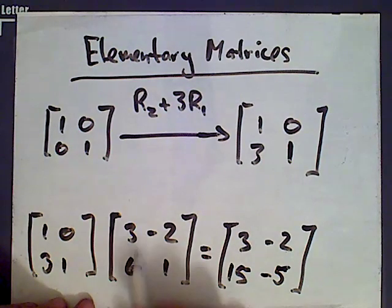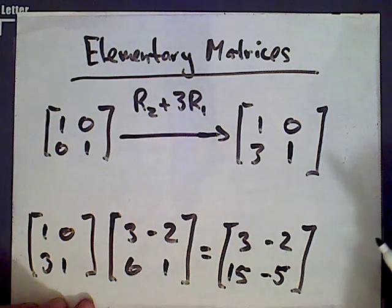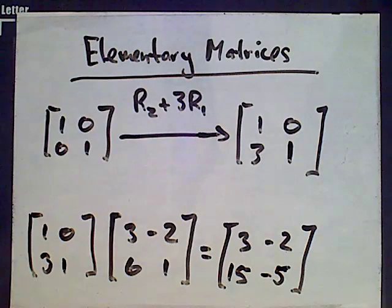So we have 6 plus 9 is 15, and then 1 minus 6 is negative 5. Okay, so what we've seen is that you can perform row operations on matrices by multiplying on the left by a given elementary matrix.